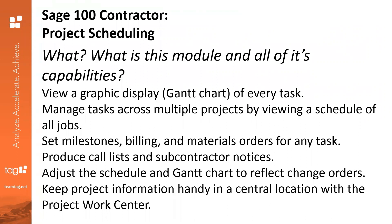If there's a delay on a project, you want to print a notice for all subcontractors that are going to be affected — that's a daunting task that can be streamlined to just a couple of clicks. You can adjust the schedule and the Gantt chart to reflect change orders. It allows you to keep all project information handy in a central location with the Project Work Center, tightly integrated with the rest of SAGE 100 Contractor. You can also easily drag and drop, move, and resize items on the Gantt chart for any schedule changes — a really nice, easy way to make adjustments quickly.